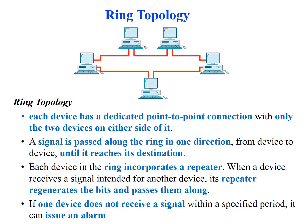Ring topology is the fifth and final basic topology. In a ring, every device has a dedicated point-to-point connection with only the two devices on either side of it. A signal passes along the ring in one direction, from device to device, until it reaches its destination — this unidirectional flow is a major disadvantage. Each device incorporates a repeater that regenerates the bits and passes them along until reaching the intended device. If a device does not receive a signal within a specific period, it alerts the network operator with an alarm about the problem and its location.